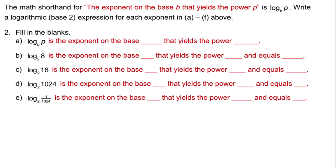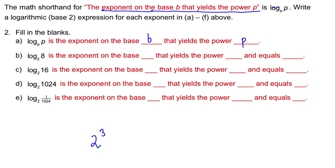Every time we see log, let's think about reading it as 'the exponent on the base of b that yields the power of p.' That means: what is the exponent on this base to get that power? Log base b of p is the exponent on the base of b that yields the power of p. Every time we can break the habit of saying '2 to the power of 3' and replace it with '2 to the exponent of 3,' emphasizing that the power is 8, that's a good thing. Log base 2 of 8 is the exponent on base 2 that yields the power of 8, and that exponent is equal to 3.